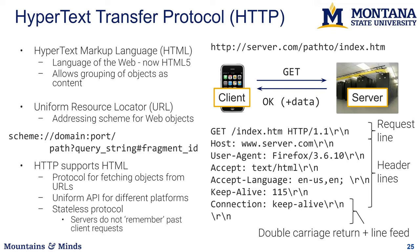Nice things about HTTP is that it supports HTML, so you can have HTML pages which embed resources, and then your browser implements HTTP to translate the links to those resources into HTTP requests that actually deliver that content to your browser. Another nice thing is that you have a uniform API for different platforms — whether you're working with JavaScript within a browser, whether you're building something in Python, or whether you're using TCP, all these things will have a uniform API for generating HTTP requests.